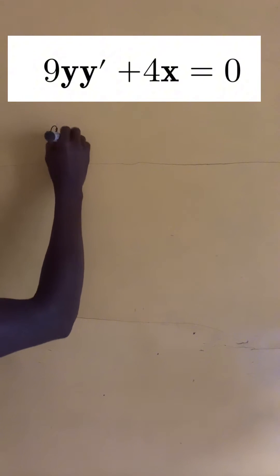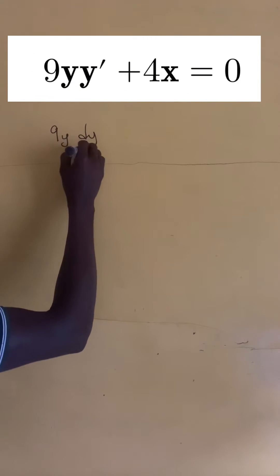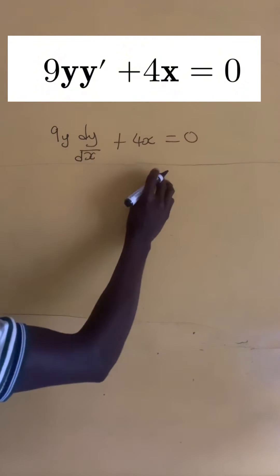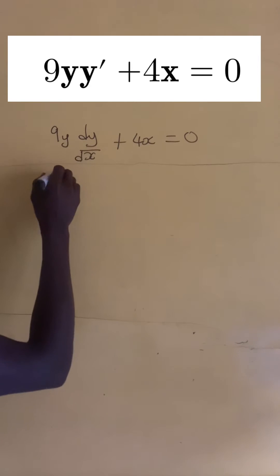Now we can rewrite this as dy dx times 9y plus 4x equals 0, where dy dx represents y prime.